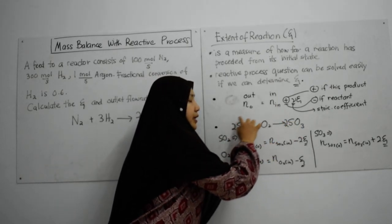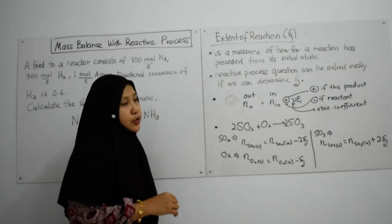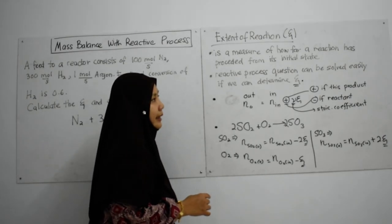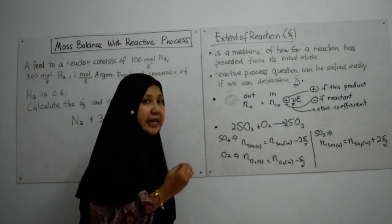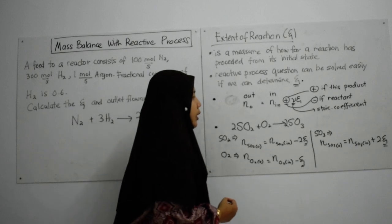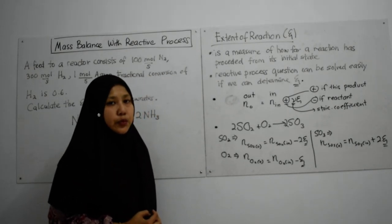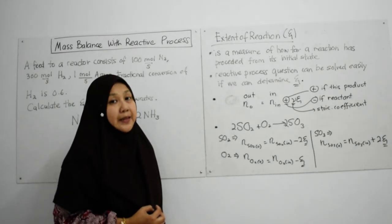This is basically how we write extent of reaction equation for compounds if you have stoichiometric reaction equation. So I am going to proceed to part 6 where I am going to show you some example of how we use extent of reaction to solve mass balance with reactive processes. See you in part 6, thank you.